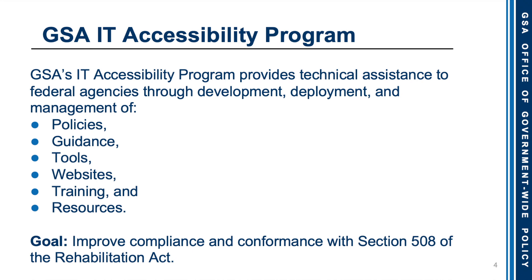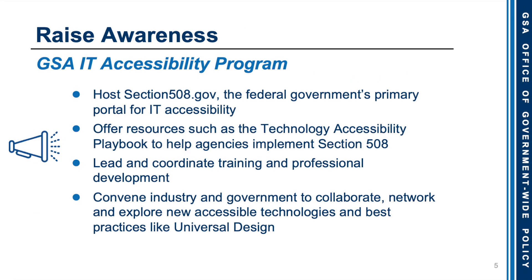The GSA IT Accessibility Program provides technical assistance to federal agencies through development, deployment, and management of policies, guidance tools, websites, training, and other resources. Our primary goal is to improve compliance and conformance with Section 508 of the Rehabilitation Act. Our goal is to raise awareness. We host Section508.gov, the federal government's primary portal for IT accessibility. We offer resources such as the Technology Accessibility Playbook to help agencies implement Section 508. We lead and coordinate training and professional development, and we convene industry and government to collaborate, network, and explore new accessible technologies and best practices, such as universal design.